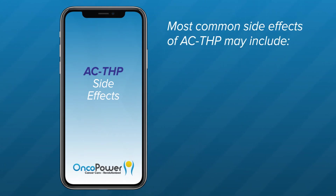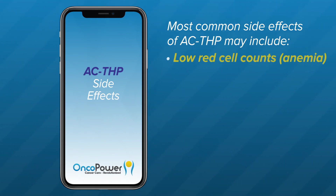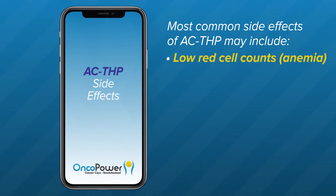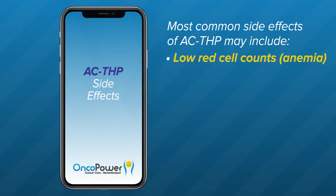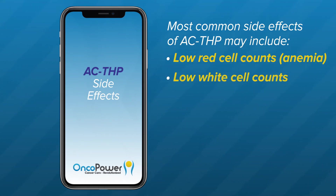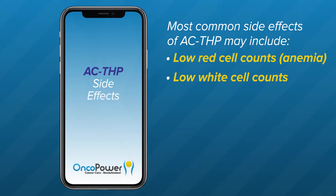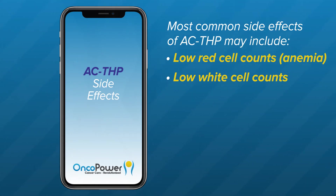The most common side effects of ACTHP may include low red cell counts or anemia. With anemia, you may experience a lot of fatigue, palpitations, increased heartbeat, and shortness of breath. Low white blood cell counts may also occur. Your doctor will administer a G-CSF medication 24 hours after treatment to reduce the chance of infection.